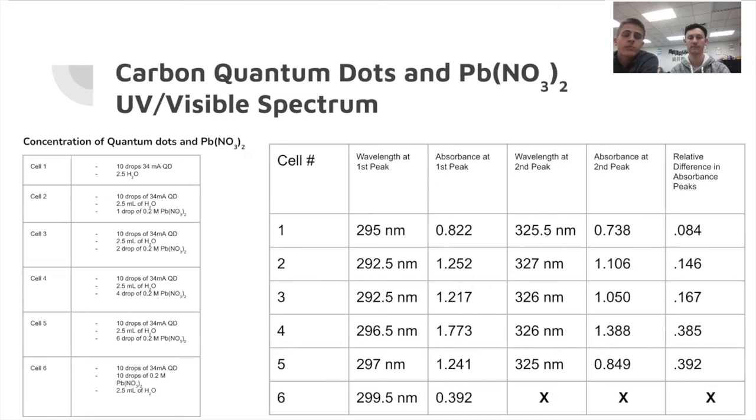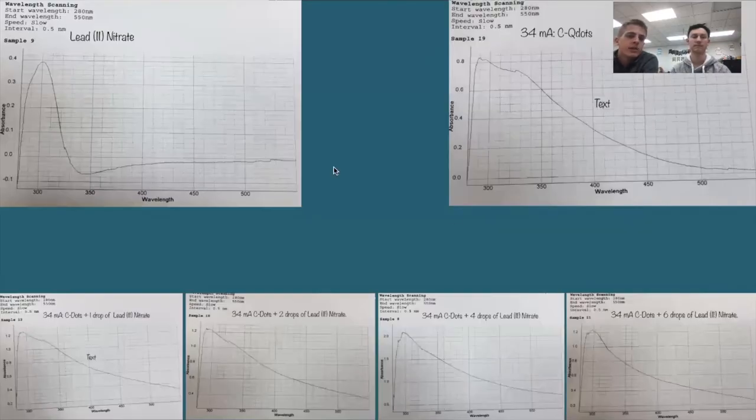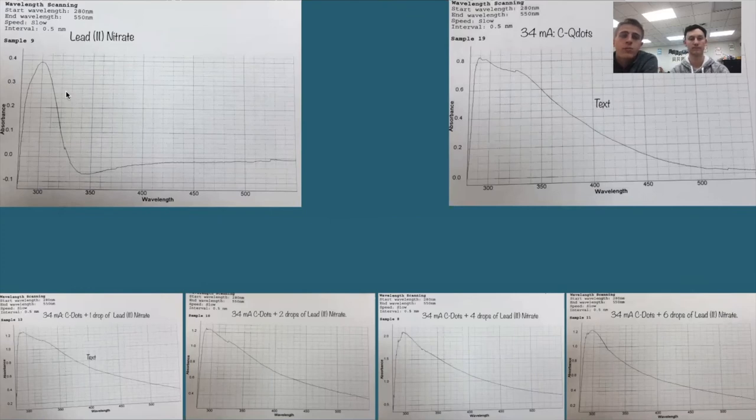We used our spectrometer and we found these same wavelengths at the absorption peaks. We found their relative difference, and just like with the copper sulfate, you can see that with just lead nitrate there's no peak at all, no secondary quantum dot peak, but with the 34 milliamp quantum dot solution we have our shoulder here which proves quantum dots. As we added more lead nitrate from one to six drops, you see that shoulder go away. Around four drops that shoulder is almost non-existent, and at six drops the shoulder is non-existent, so that proves that the quantum dots are quenching that metal.